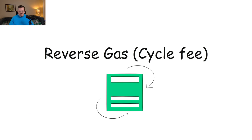Another advantage to Internet Computer is their reverse gas model, or cycle fee as they refer to it. This means that users typically don't need gas to interact with and use dApps and other services hosted and built on Internet Computer, which makes adoption far, far easier.